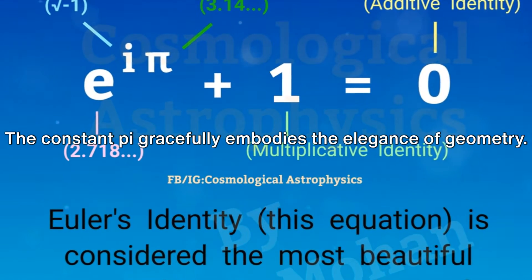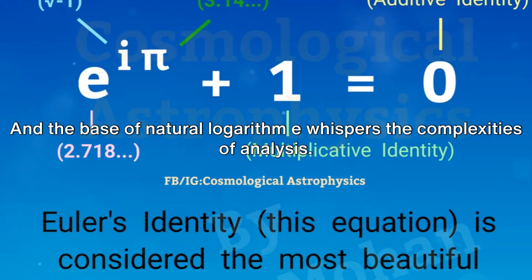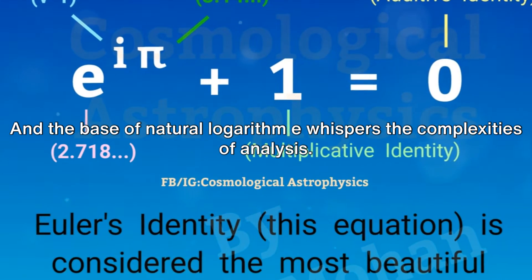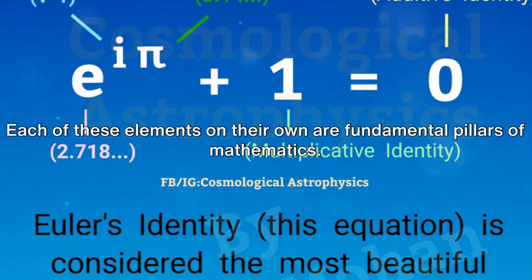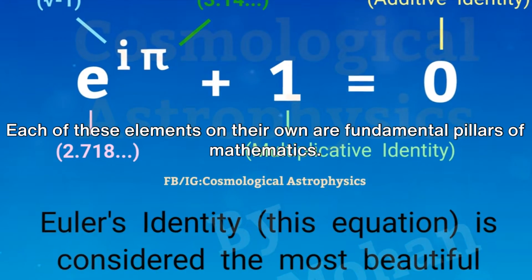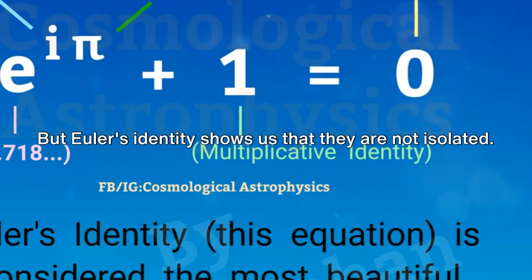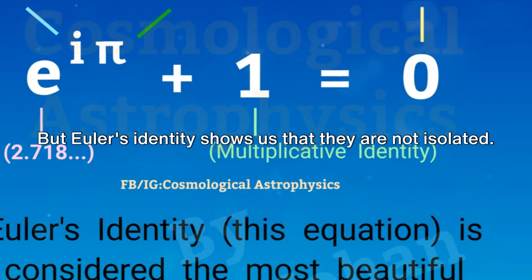Each of these elements on their own are fundamental pillars of mathematics, but Euler's identity shows us that they are not isolated—they are interconnected, intertwined in a beautiful and mystifying way.